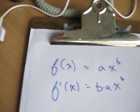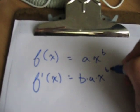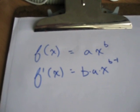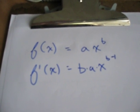You drop the exponent on x down to the front. So you have b times a x to the b, and then you subtract 1 from the exponent. So the derivative is b times a times x to the b minus 1 power.